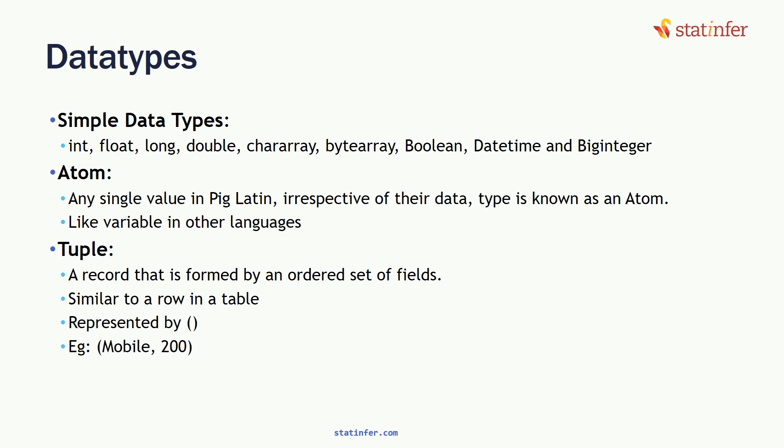The first unique data type is atom — it is just a single value in Pig Latin script, irrespective of the data type, whether it is an integer, float, long, or character. Everything is known as an atom. It's like calling it a dynamic variable in other languages — simply a variable, whether numerical, character, or a date value.